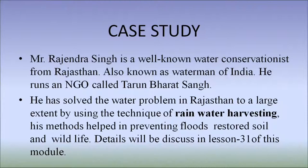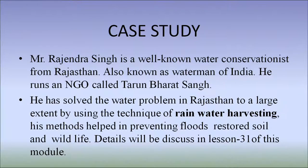Mr. Rajinder Singh is a well-known water conservationist from Rajasthan, also known as the Waterman of India. He runs an NGO called Tarun Bharat Sangh. He has solved the water problem in Rajasthan to a large extent by using the technique of rainwater harvesting. His methods help in preventing floods, restoring soil and bringing back wildlife. Details will be discussed in lesson 31 of this module.